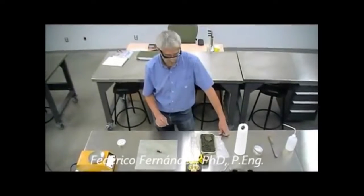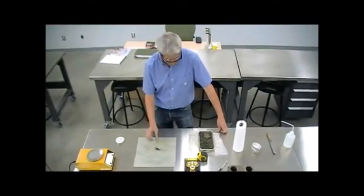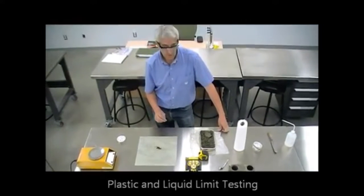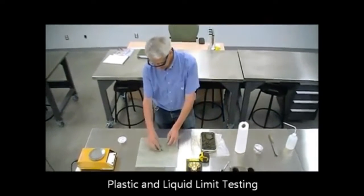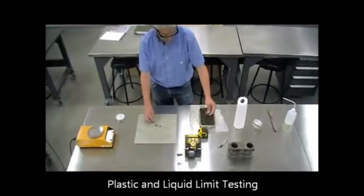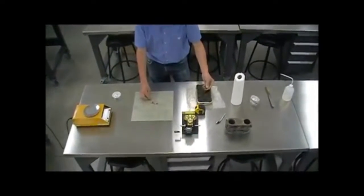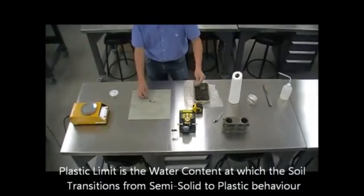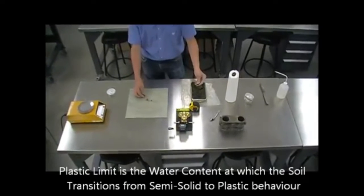There are two tests that we do to determine the plastic and the liquid limit. We will start with the plastic limit. The plastic limit is the state of moisture in a soil that separates plastic behavior from solid behavior.